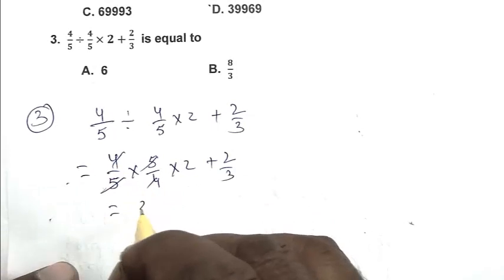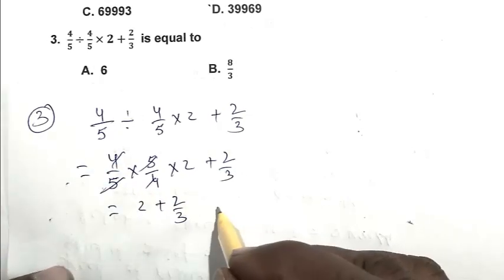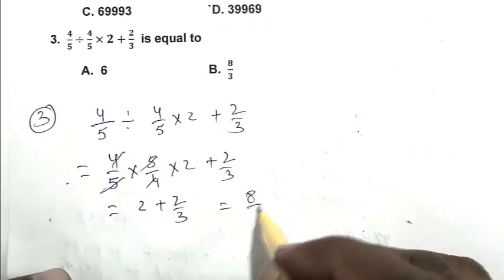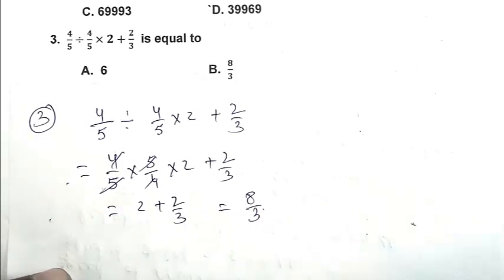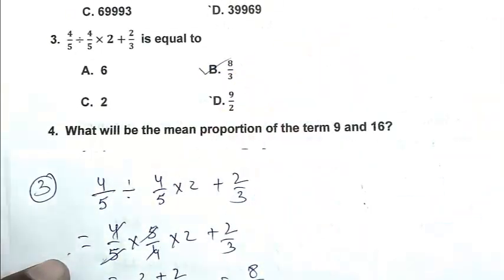So 2 + 2/3, that is 8/3. So B is the right answer.